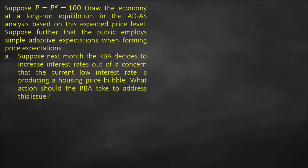The first part of the question: suppose next month the RBA decides to increase interest rates, out of concern that the current low interest rate is producing a housing price bubble. What action would the RBA take to address this issue? Our target for the central bank, the Reserve Bank of Australia, is to increase interest rates, so they will go through something called open market operations.